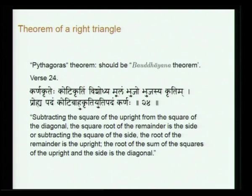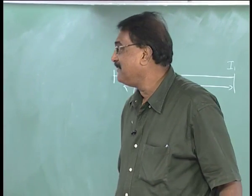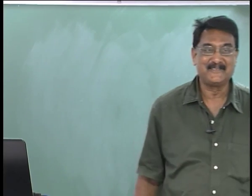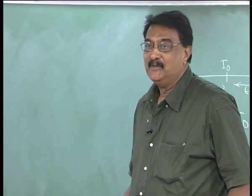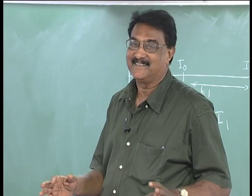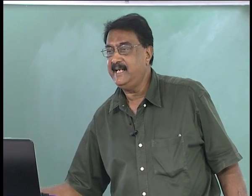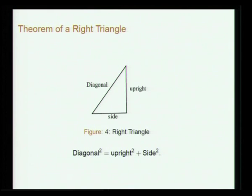Then comes the theorem of the right triangle — the so-called Pythagorean theorem, perhaps better called the Baudhayana theorem, as most civilizations knew about it before Pythagoras. Brahmagupta states: subtracting the square of the upright from the square of the diagonal, the square root of the remainder is the side; or subtracting the square of the side, the root is the upright; and the root of the sum of squares of the upright and the side is the diagonal.